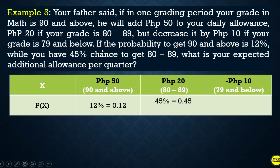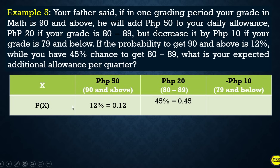In this problem, the corresponding probability for getting 79 and below is not given. We apply one of the two properties of discrete probability distributions: all probabilities must sum to one, meaning 100%. So we subtract: 100% minus the sum of the other two probabilities — 12% plus 45% equals 57%, and 100% minus 57% equals 43%. Therefore the probability of getting 79 and below is 43%, or 0.43.